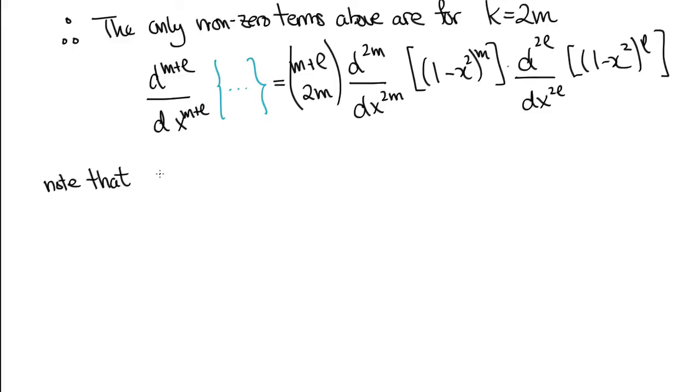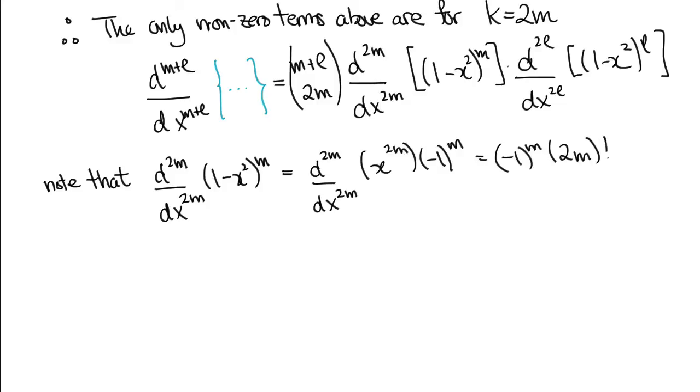Now the 2Mth derivative of 1 minus X squared to the M is easy to compute, because if you were to expand the bracket, the only surviving term would be the highest order polynomial, so this results in the minus 1 to the M times 2M factorial.